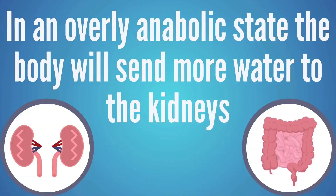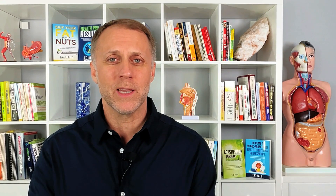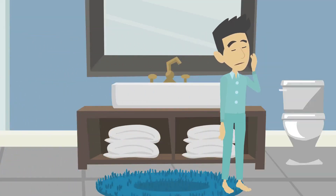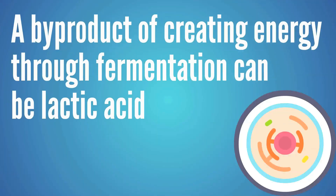These are just possible issues that we see in this imbalance and these seem to be the most common. In an overly anabolic state, the body will send more of our water through the kidneys and less to the bowel, so the person's stool can get a little bit hard and dry and make it harder to move. They may also find themselves getting up to pee a lot in the middle of the night because the body is sending all of its water through the kidneys. In an overly anabolic state, the body also likes to create energy through fermentation, and a byproduct of creating energy through fermentation can be lactic acid. So if the body is stuck in this anabolic state and creating a lot of its energy through fermentation, it can accumulate too much lactic acid, which can cause anxiety and even panic attacks.